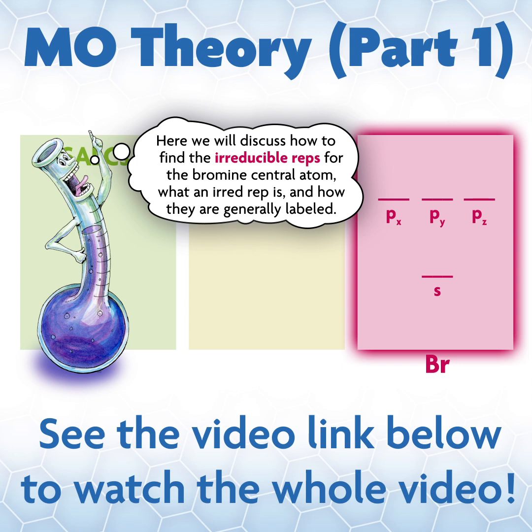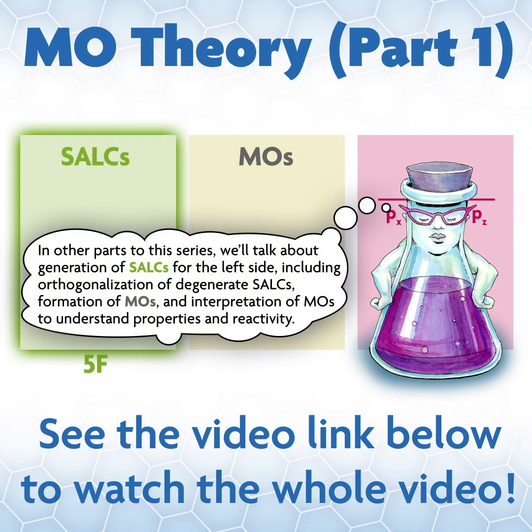Here we'll discuss how to find the irreducible representations for the bromine central atom, what an irreducible representation is, and how they are generally labeled. In other parts of this series, we'll talk about generation of SALCs for the ligand side, including orthogonalization of degenerate SALCs, formation of MOs, and interpretation of MOs to understand properties and reactivity.